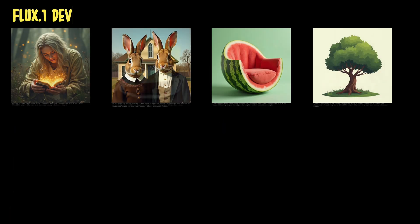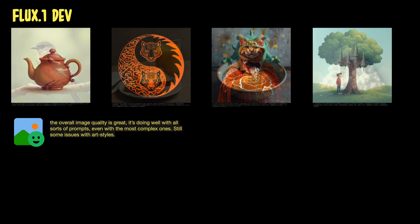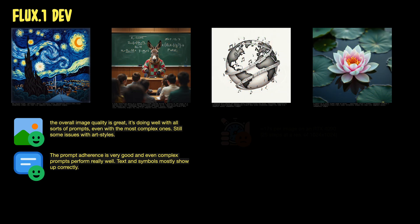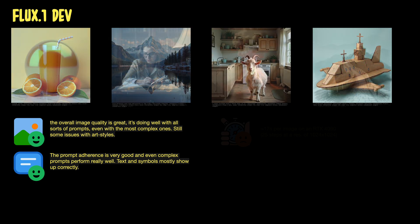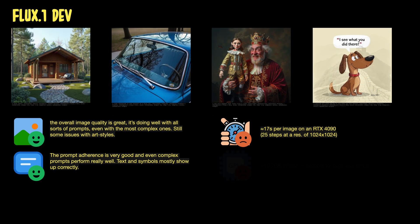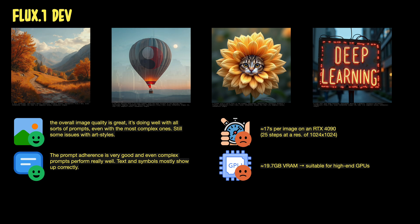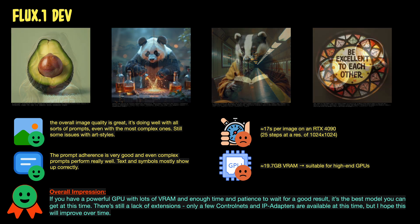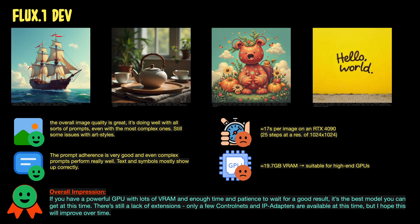There's an even more powerful model in the Flux family called Flux.1 Dev, and the image quality is really great with all sorts of prompts. Still some minor issues with art styles, but overall it's a really good model. The prompt adherence is very good — there are hardly any problems with complex prompts or with rendering text and symbols. So it's something of a game-changer, but it comes with a price. It took me about 17 seconds on average to render an image at 25 steps, even on my very powerful RTX 4090, and it uses close to 20GB of VRAM, so it's definitely only suitable for a high-end GPU. If you have a powerful machine and some patience, I would recommend taking a closer look at this model — it's really top-tier. Like with Schnell, there aren't many extensions available at the time of this recording, but I expect that to change over time.